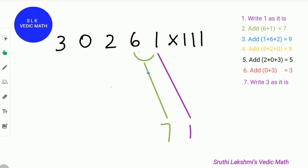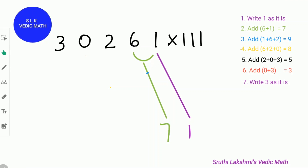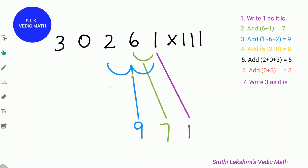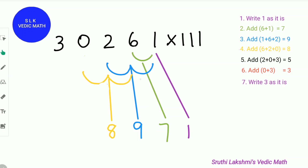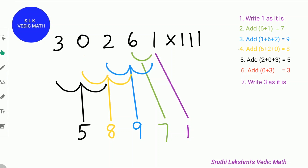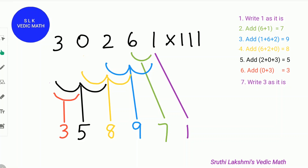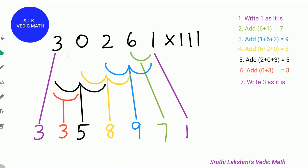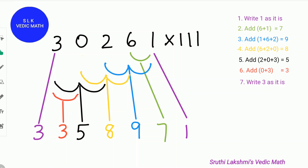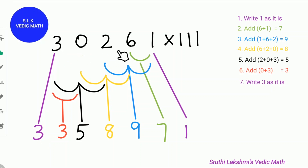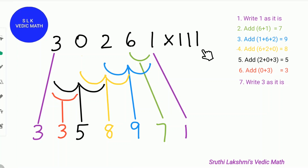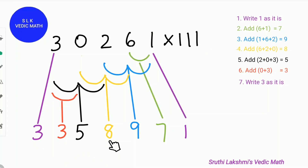First, write the last digit 1 as it is. Next, add 6 plus 1, which is 7. Then add 1 plus 6 plus 2, which is 9. Then add 6 plus 2 plus 0, which is 8. After that, add 2 plus 0 plus 3, which is 5. Then add 3 plus 0, which is 3. Now write down the first digit 3 as it is. So 30261 times 111 is 3,358,971.